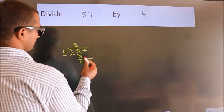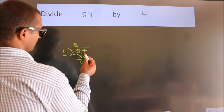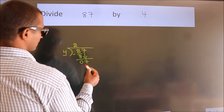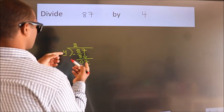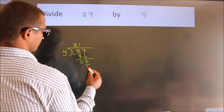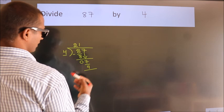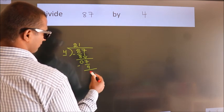After this, bring down the beside number. So 7 down. So 7. A number close to 7 in the 4 table is 4 1's are 4. Now we subtract.